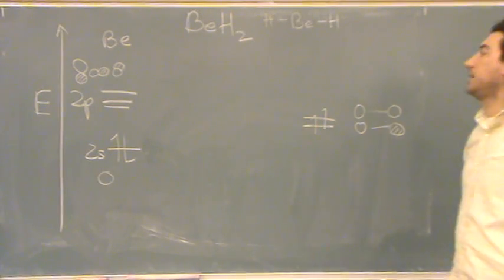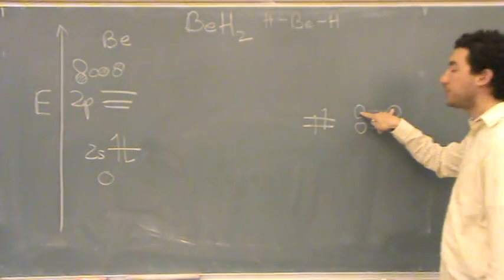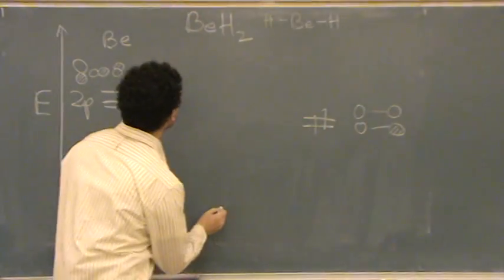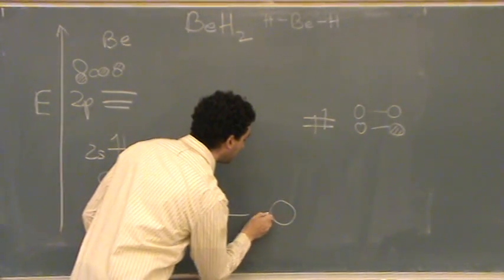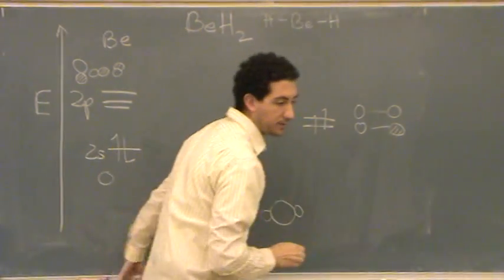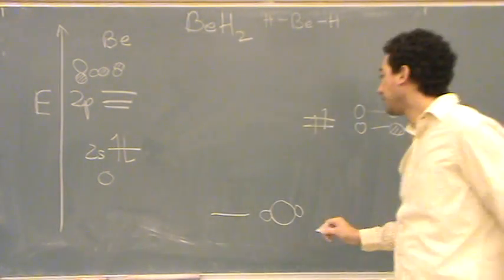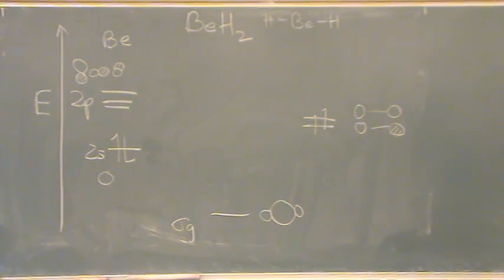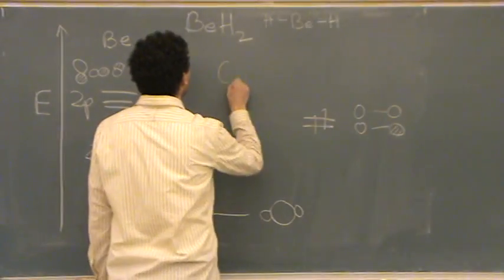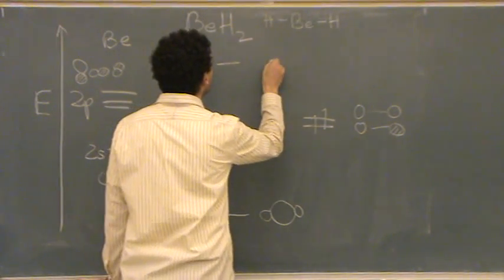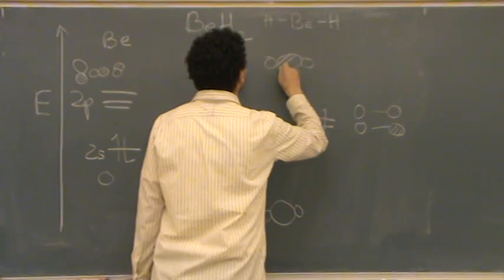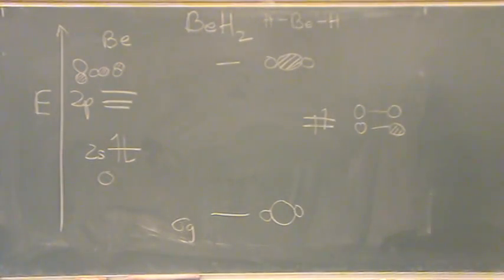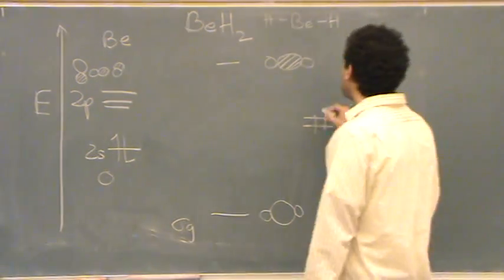The lowest energy combination: if you take the S orbital and put it between those two hydrogens, that'd be the lowest possible energy. So the beryllium in the middle and the two hydrogens on either side — this would be called a sigma sub-G, or gerade. So our sigma-G. Then the anti-bonding of that would be up here, where the beryllium is out of phase with the hydrogens — that's a sigma-G star.